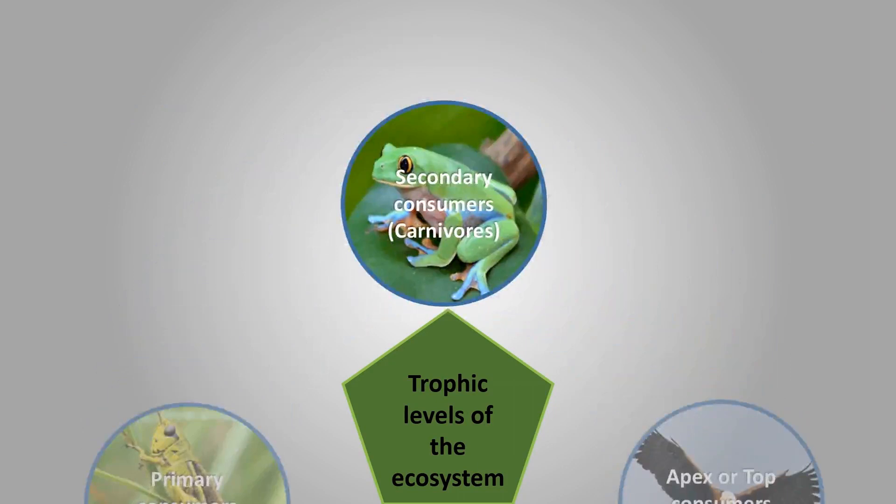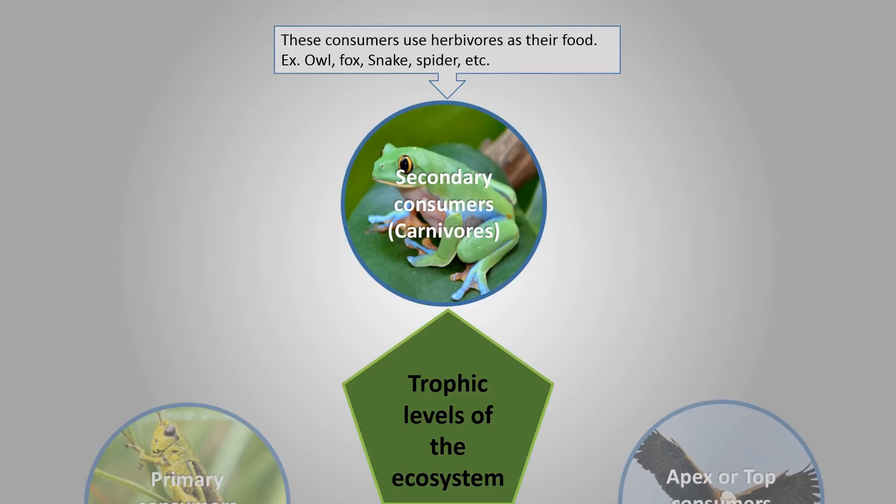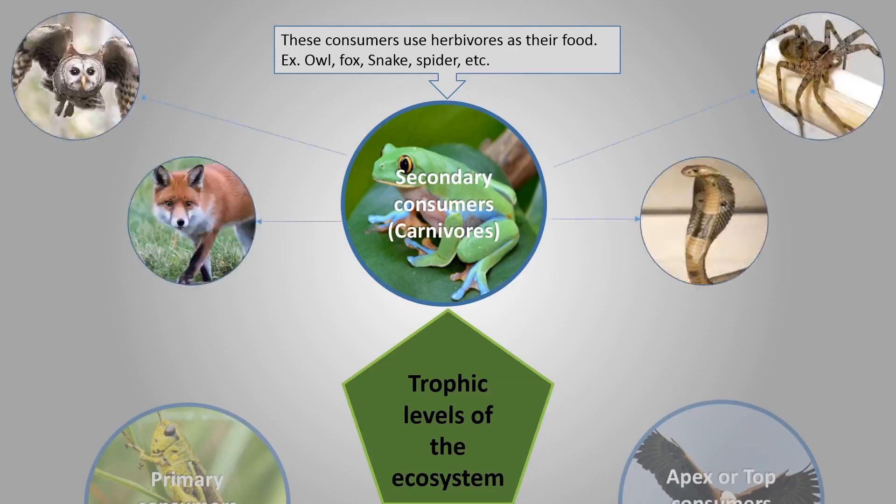Secondary consumers, carnivores, these consumers use herbivores as their food. Examples: owl, fox, snake, spider, etc.